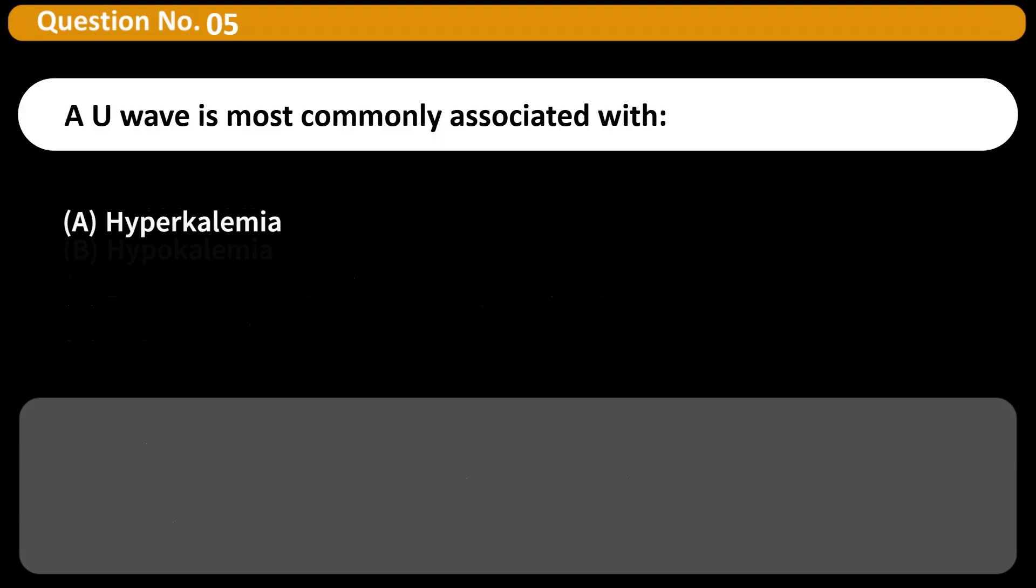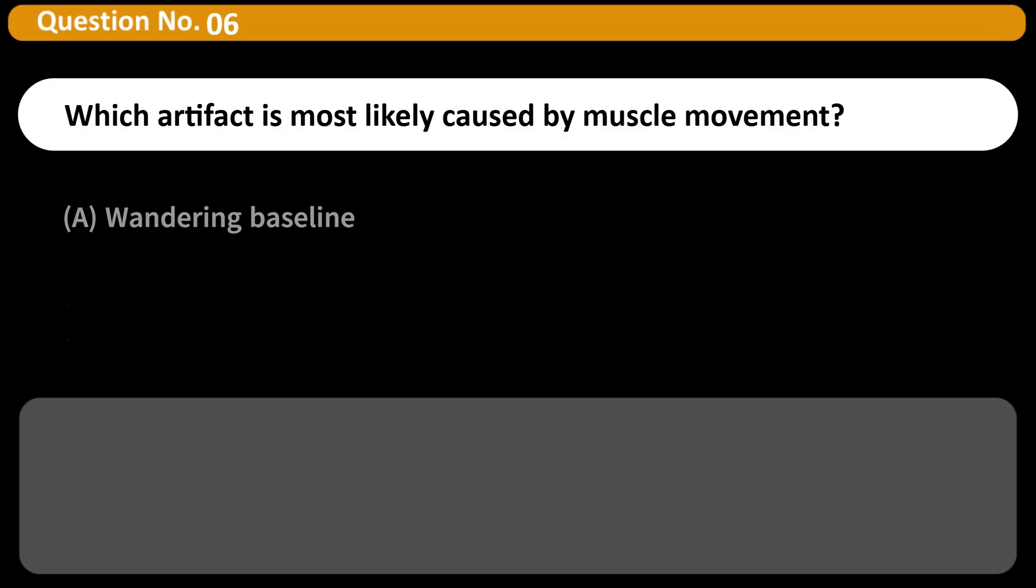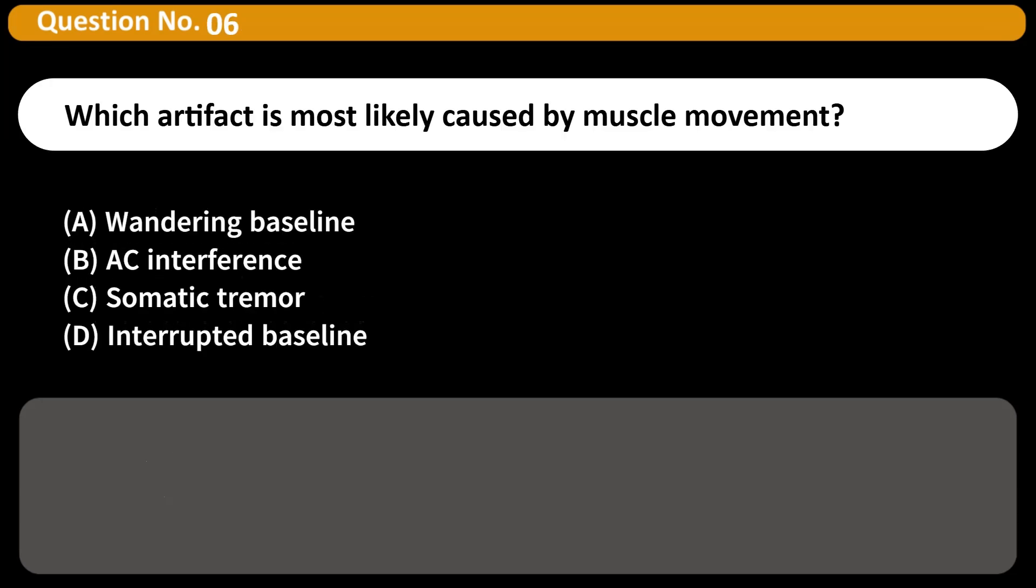A U-wave is most commonly associated with A. Hyperkalemia B. Hypokalemia C. Myocardial infarction D. Atrial fibrillation Answer B. Prominent U-waves can appear with low potassium hypokalemia.